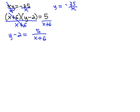Once we've divided each equation by the same factor, we can make a quick substitution. Knowing that y is equal to negative 35 over x, we can replace the y in the other equation with negative 35 over x minus 2 equals 5 over x plus 6.